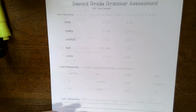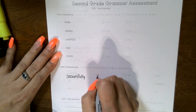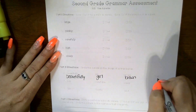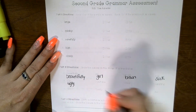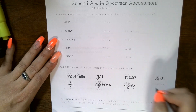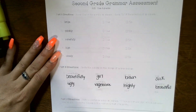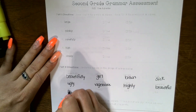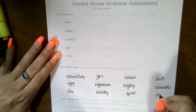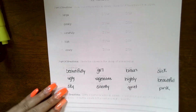Circle the adverb in the group of words below. Now these copies did not come out great, so I will rewrite these. Number six should say beautifully. Number seven should say: ugly, vegetable, highly, and beautiful. Number eight should say — I'm not sure what that one is — sky, silently, quiet, or pink. Remember, you're circling your adverb. For your next two questions, write a sentence using an adverb and then circle the adverb.